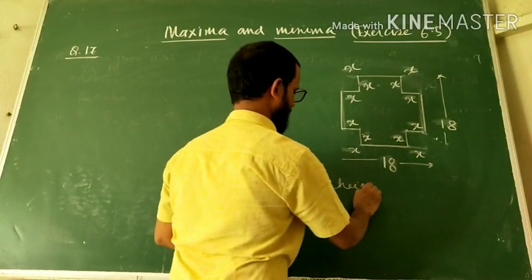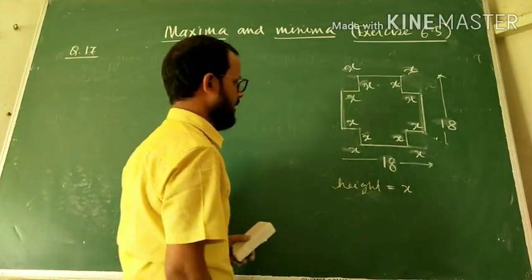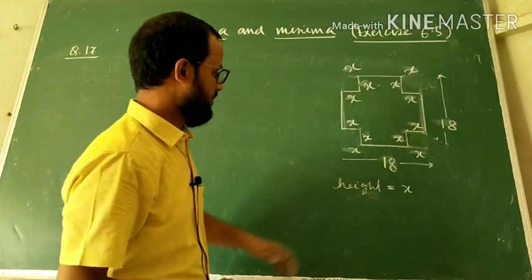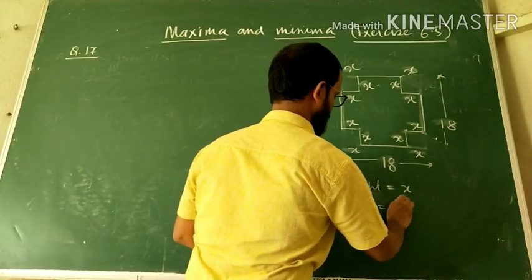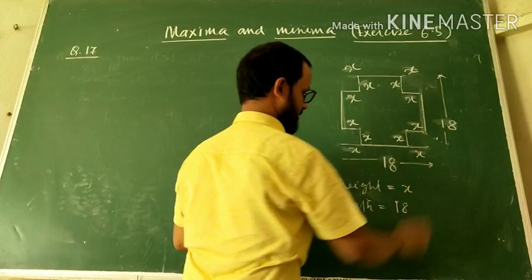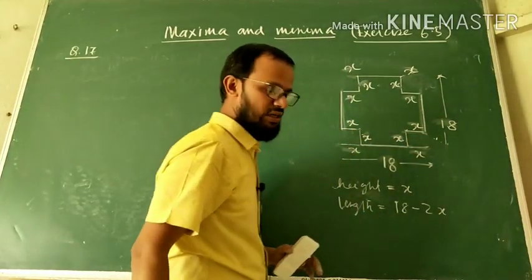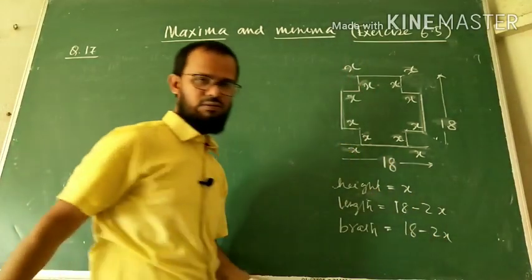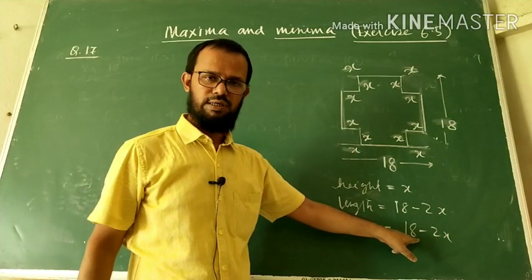Now, what will be the height of the box? Obviously, height is equal to x — the length of the square cut from each corner. After folding the flaps up, what will be the length and breadth? The length of the box equals 18 minus twice x (since x is cut from each side). Similarly, the breadth is also 18 minus twice x.